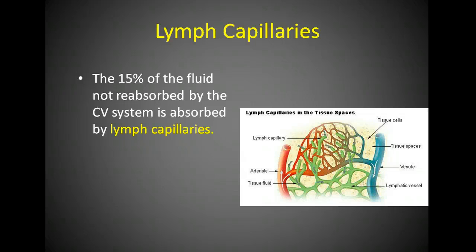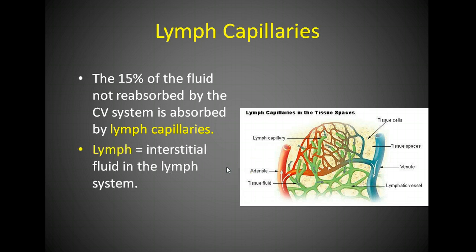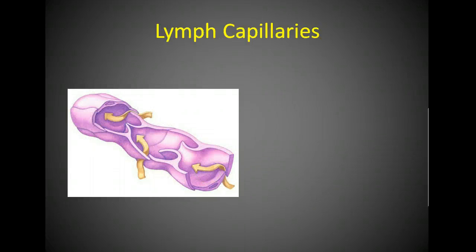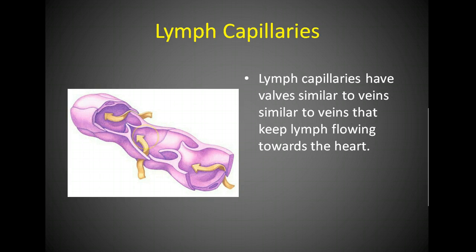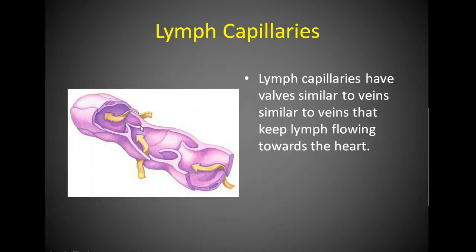The 15% of fluid not reabsorbed by the cardiovascular system is absorbed by the lymph capillaries. This drawing shows how lymph capillaries are closely related to the other capillaries. Lymph is the interstitial fluid within the lymph system. Lymph capillaries have valves similar to veins. There is no muscle here, so we need a way to keep the lymph moving in the right direction — those valves keep lymph moving towards the heart.